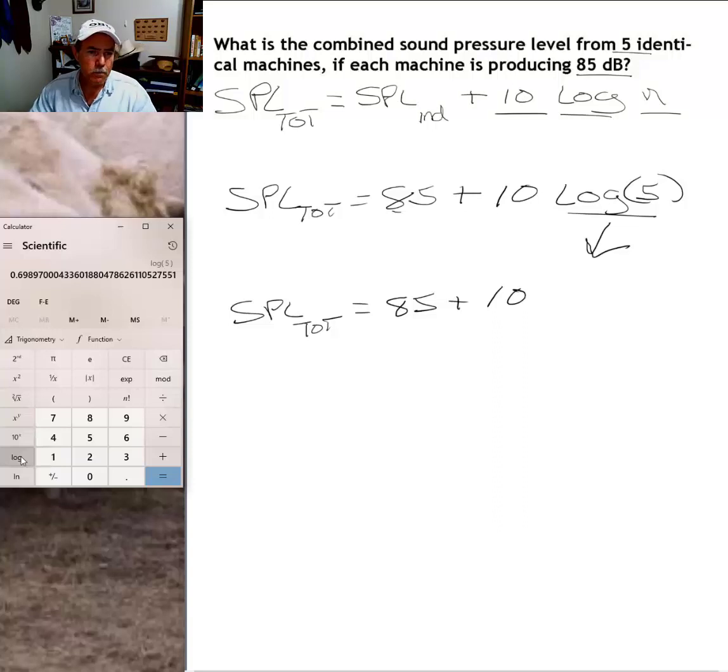But the logarithm of five is right here in our calculator readout: 0.6989, and then just a decimal value that goes on forever. But we're just going to round this to 0.7. So the logarithm of five is 0.7, and I'm going to put parentheses around that just to distinguish it from the ten.